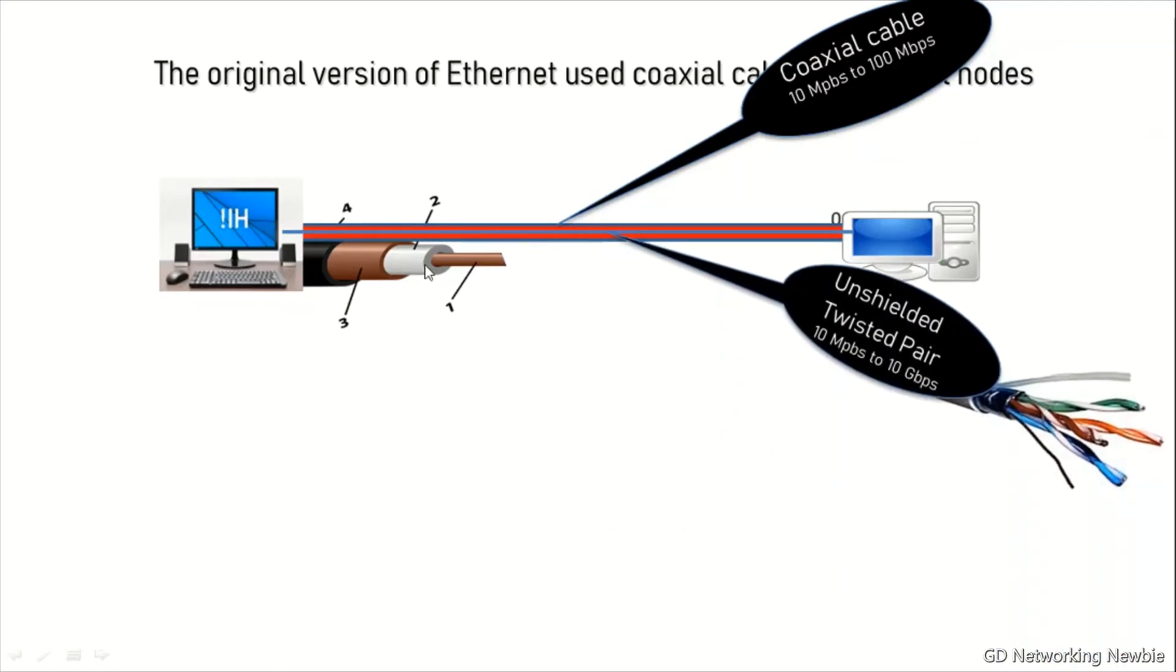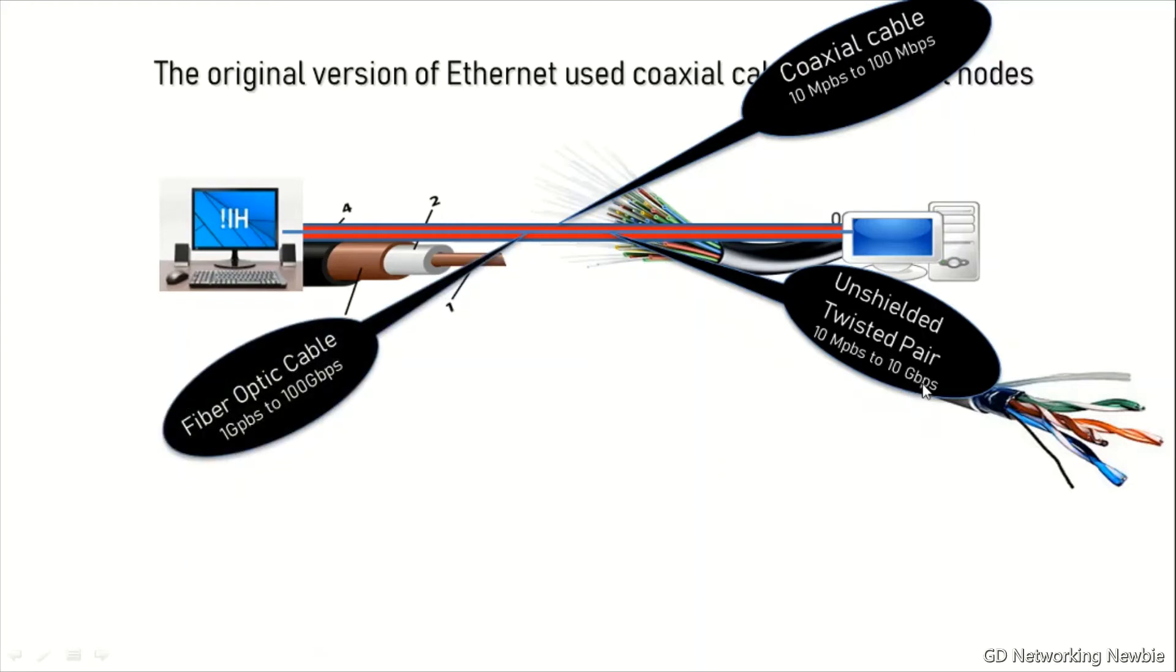After coaxial cable, a faster cable was introduced called UTP or unshielded twisted pair, and it offered data rates from 10 megabits per second to 10 gigabits per second.